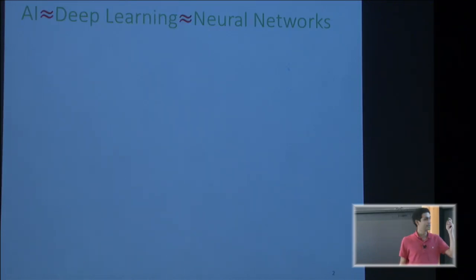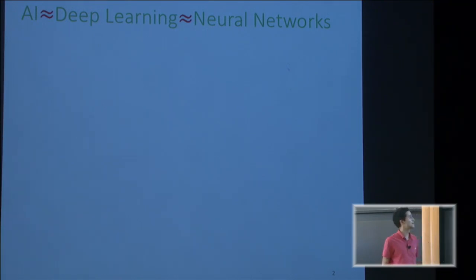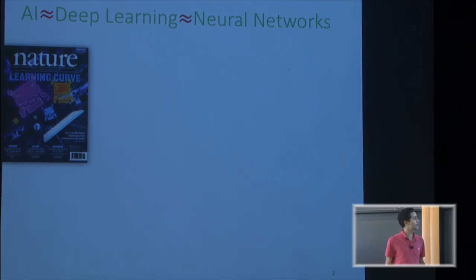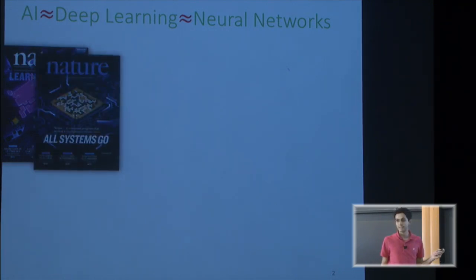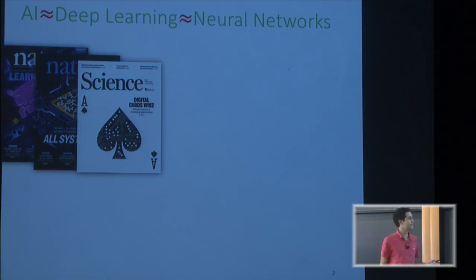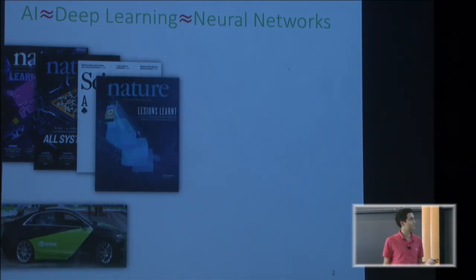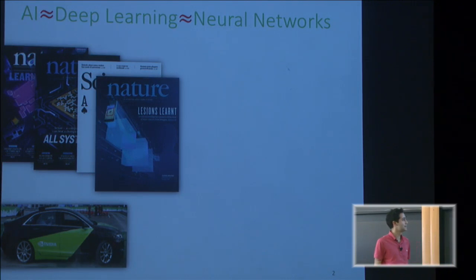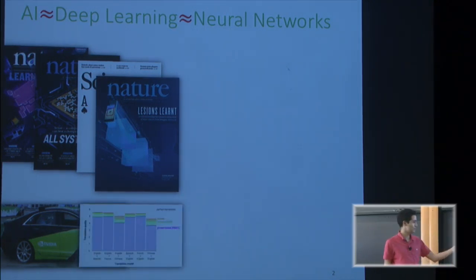You've all heard about AI in the news, and it almost always corresponds to deep learning. Deep learning is a rebranding of neural networks — they just wanted to make it cool. Deep learning can do a lot of interesting things: it can beat humans in video games, in Go, in poker. It can drive cars. It can even do better than a certified, trained dermatologist at detecting or classifying skin cancer.